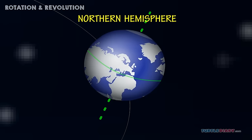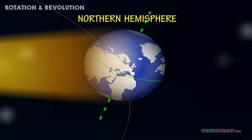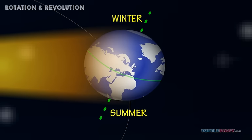So it doesn't get much of the Sun's light. The southern hemisphere gets more sunlight. So the southern hemisphere has summer while the northern hemisphere has winter.